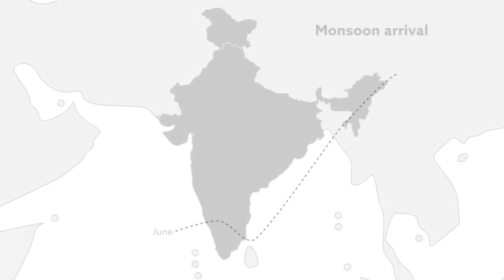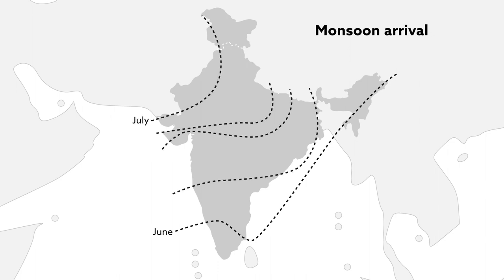That's an improvement over current methods, which predict monsoon arrivals only two to three weeks ahead, with an accuracy of plus or minus five days.